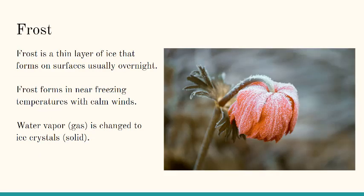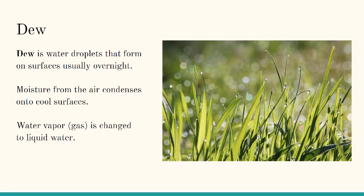Frost is a thin layer of ice that forms on surfaces, usually overnight. Frost forms in near freezing temperatures with calm winds. In this case, water vapor, a gas, is changed to ice crystals, a solid. A similar process is dew. Dew is water droplets that form on surfaces, usually overnight. Moisture from the air condenses onto cool surfaces — water vapor, a gas, is changed to liquid water.